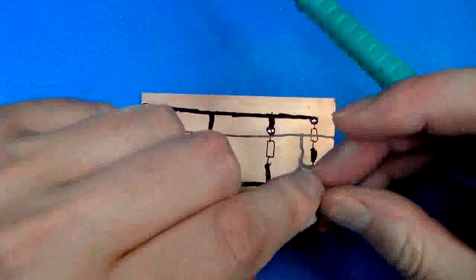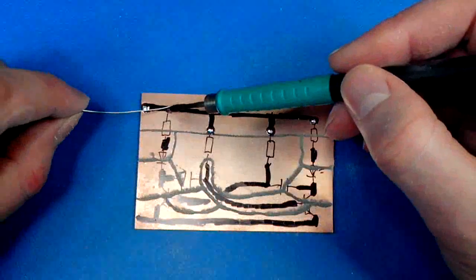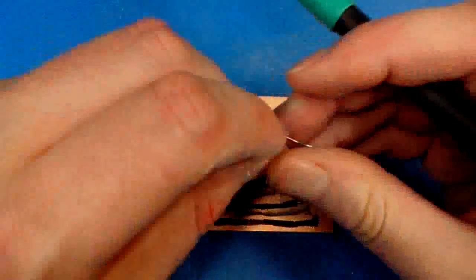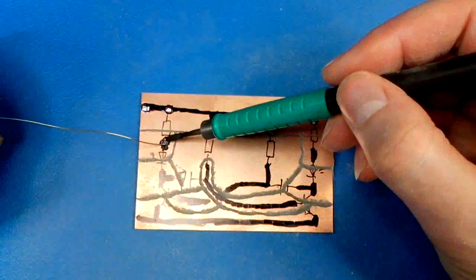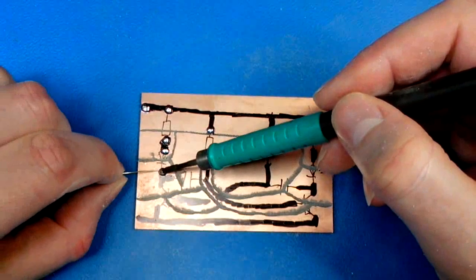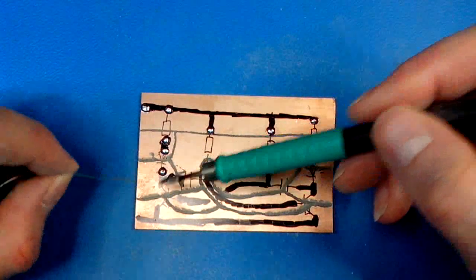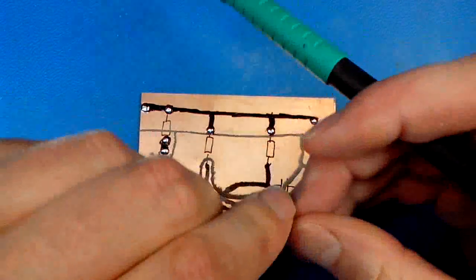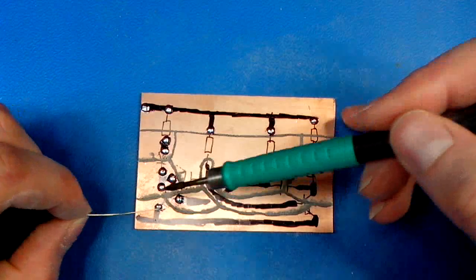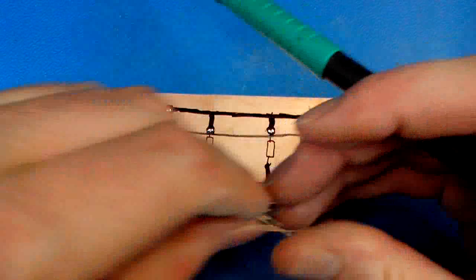One advantage of this compared to vero board is that you have more control about the inductance. If you want a very low impedance connection between nodes, you can use very wide copper traces. On vero board, the copper is only so wide, so you have no control. Here I put three blobs of solder at one node. You could put one blob and stick multiple component leads in there, but I find it easier to do one blob per component lead.